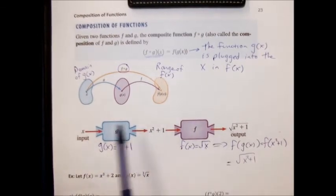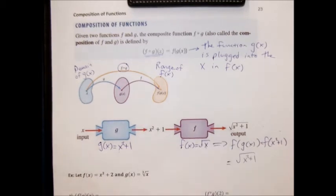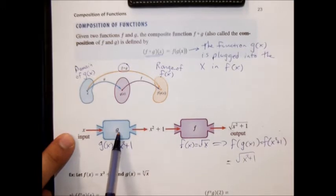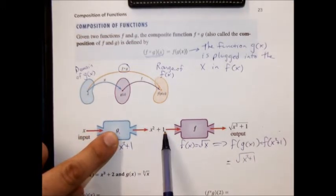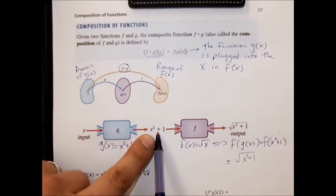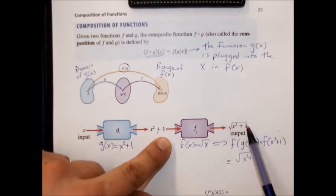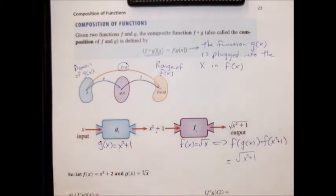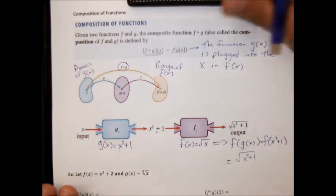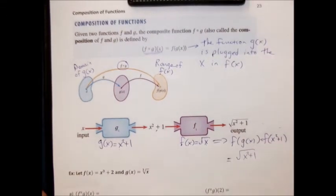You can do it in two steps — plug in one function at a time — or if you already have the composite function, it takes x values in the domain of g and sends them directly to the range of f. In the specific whoopee cushion example: input goes into g first, evaluated as x squared plus 1, then that result goes into f and we take the square root. In practice, all we're doing is following the same intuition about plugging things into other functions — except instead of a number, we're plugging entire functions in.